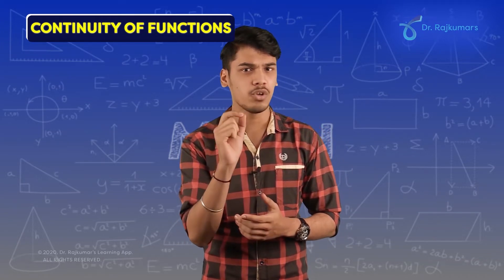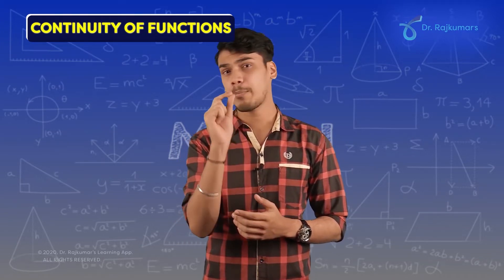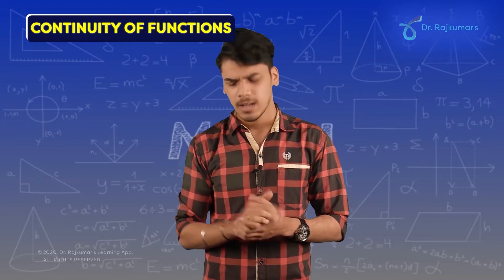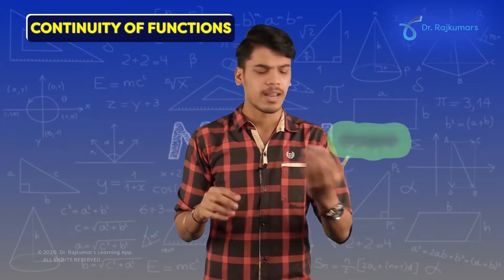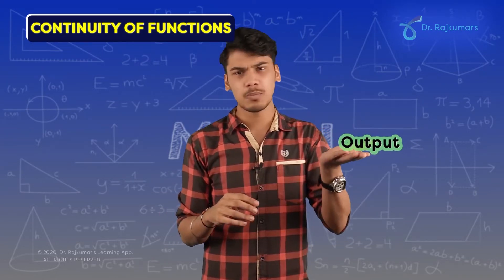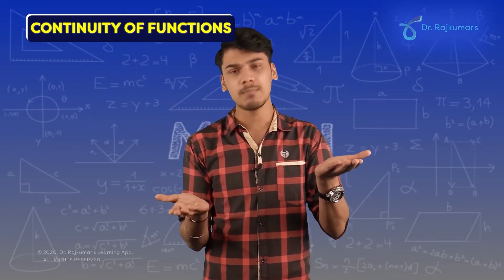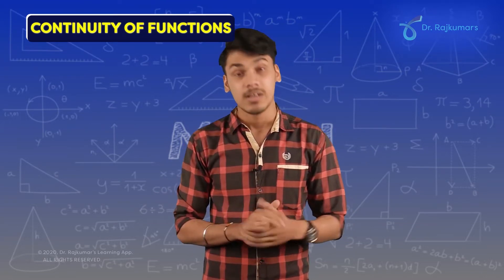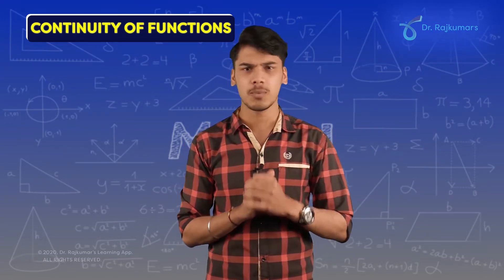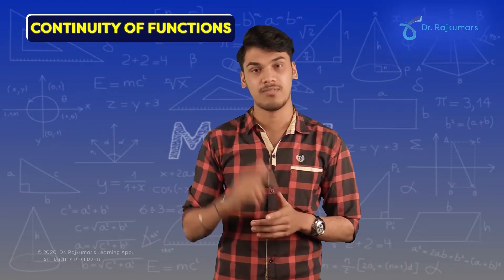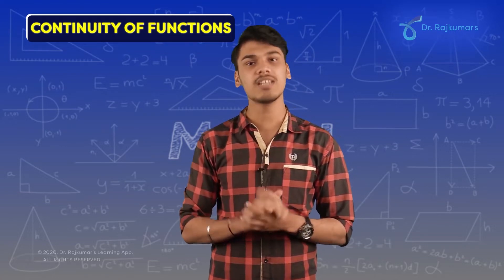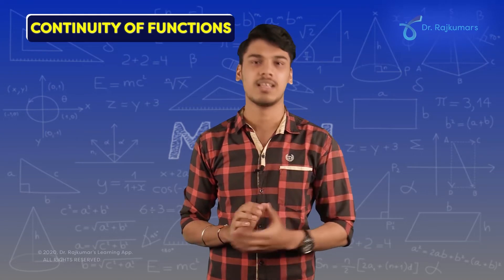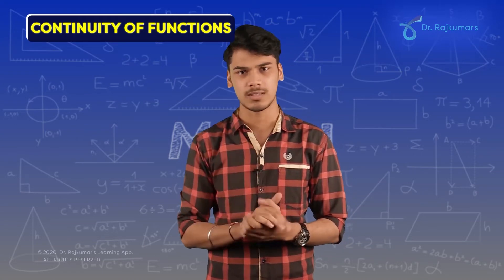When a function is given to you, you can plot that function on a graph. You give some inputs to the function, get certain outputs, and mark this input and output on the graph to get a curve. Check whether this curve is continuous or not. If the curve is continuous, then the function is said to be continuous. If the curve is not continuous, then the function is said to be discontinuous.